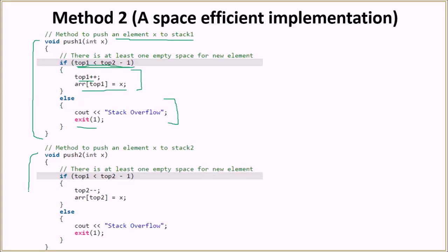Similarly, for push2, that is pushing to the second stack, we again have the same condition to check if there is space in the stack. Otherwise, we print stack overflow. Now, in the push1 operation, we were doing top1++. Here, we will be doing top2-- because we are starting from the rightmost part of the array. Then we place the element x at top2.